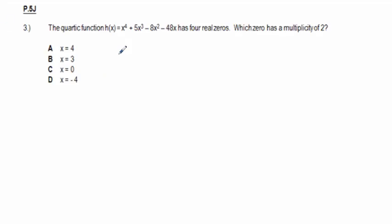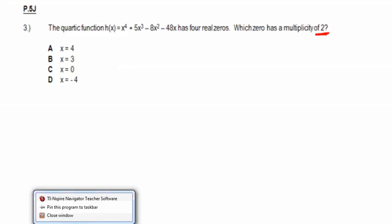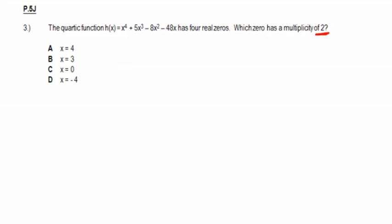Problem 3: the quartic function x⁴ + 5x³ - 8x² - 48x has four real zeros. Which zero has a multiplicity of two? By the Fundamental Theorem of Algebra, the number of zeros equals the degree of the function, which is four, and some zeros may be repeated. So for a multiplicity of two, at least one zero must be repeated.